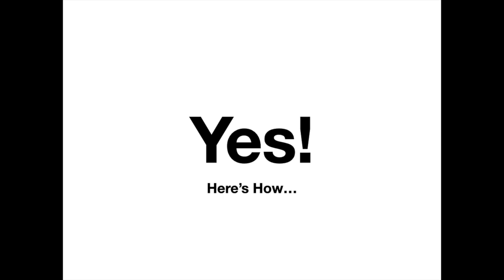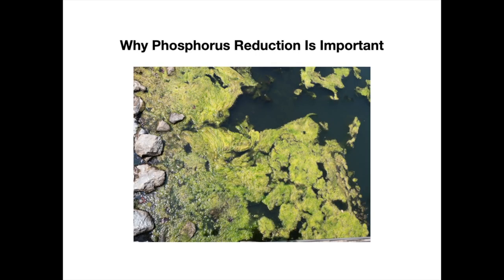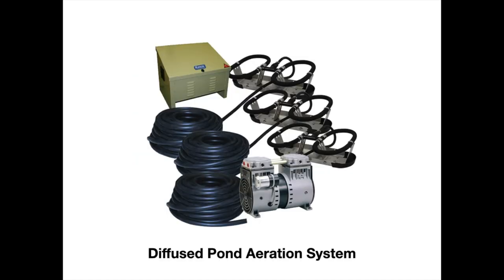First, let's cover why you would want to reduce phosphorus in the first place. The answer can be summed up with one word: algae. Phosphorus is a primary driver of algae blooms, and when you reduce it in a pond environment you can often limit, reduce, or even eliminate algae blooms. It's important to consider both phosphorus and nitrogen as the two primary drivers of algae.